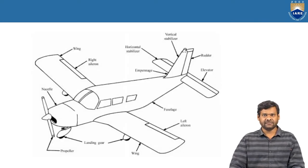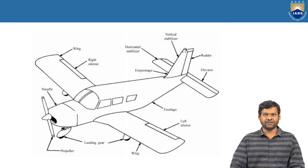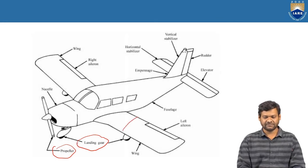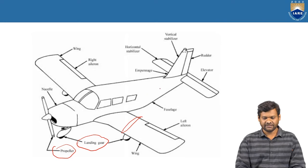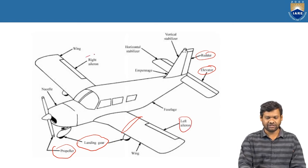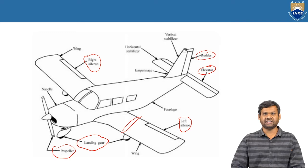This is a single-seater aircraft engine. The main objective of this slide is to identify the components of an aircraft. Coming from the nose, first is a propeller, then we have a landing gear — 1, 2, 3 — and we have a wing structure. This is an aileron, fuselage, horizontal stabilizer, vertical stabilizer, rudder, and elevator. The rudder, elevator, and ailerons — left and right — are called the control surfaces of an airplane.